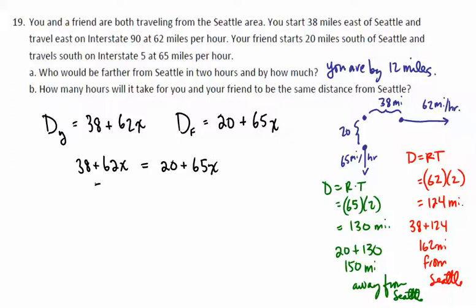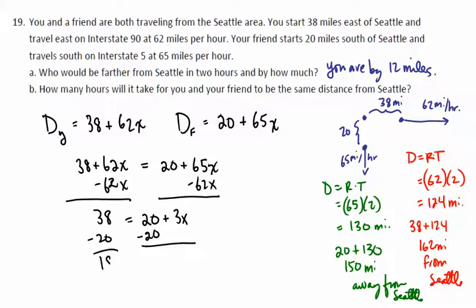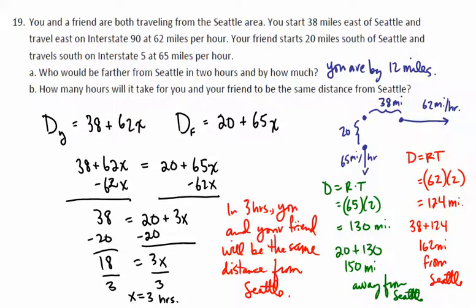So we simply set 38 plus 62X equal to 20 plus 65X. And easiest thing might be to subtract 62X from both sides to end up with 38 is equal to 20 plus 3X, subtract 20 on both sides, leaving 18 is equal to 3X, divide by 3, and so X equals 3. What is that? It's 3 hours. And so we say that in 3 hours, you and your friend will be the same distance from Seattle.